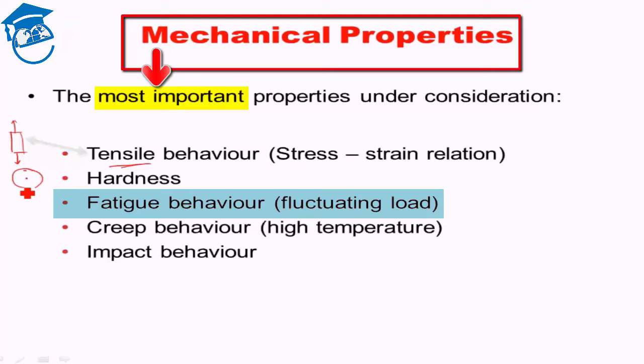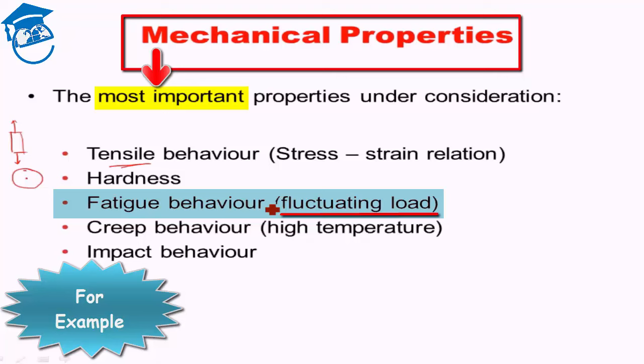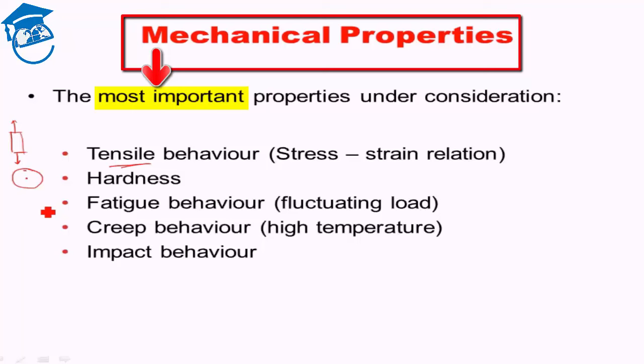In tensile behavior the load is constant and you see the response, but in fatigue the load fluctuates. For example, a bridge experiences different fluctuating loads from different vehicles and varying wind velocity — sometimes the load is quite high, sometimes very nominal. The response of the material to fluctuating load is studied under fatigue behavior.